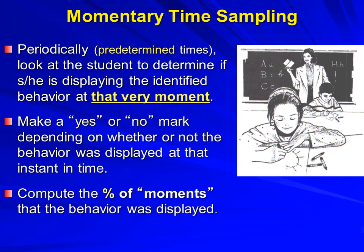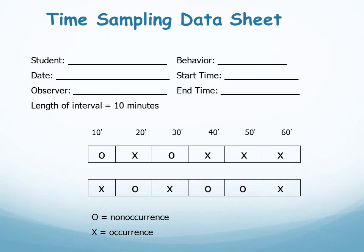Momentary time sampling allows us to estimate the percent of time that the behavior was occurring. Studies have shown that the percent of moments found in MTS is essentially equivalent to the percent of time a child was engaged in the behavior had we done duration recording. MTS and duration recording results are quite similar when both are conducted on the same behavior. So in what percent of moments — at that exact instant, not the second before or after — did the behavior actually occur? You can pause the podcast and figure out the percent of moments.